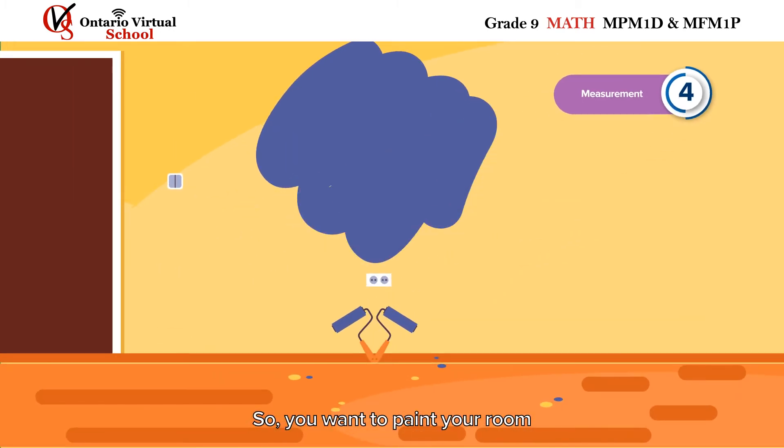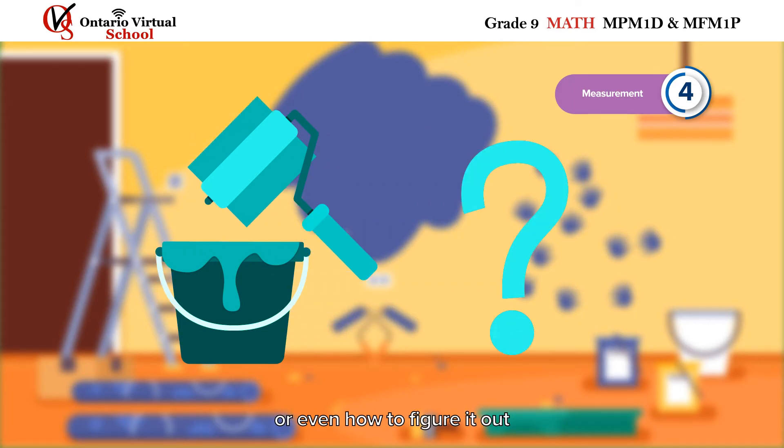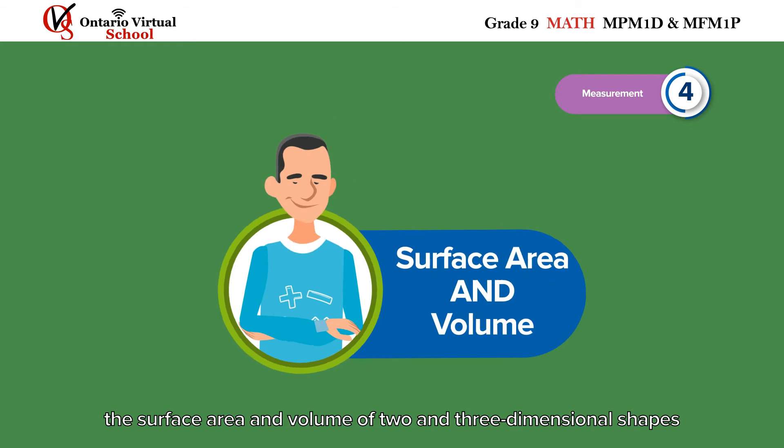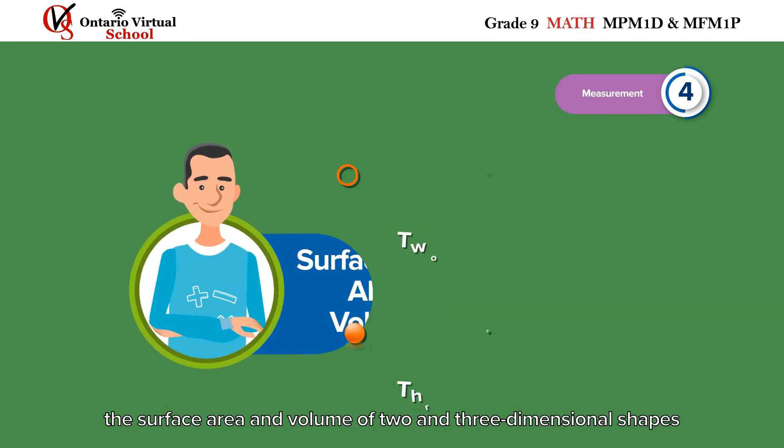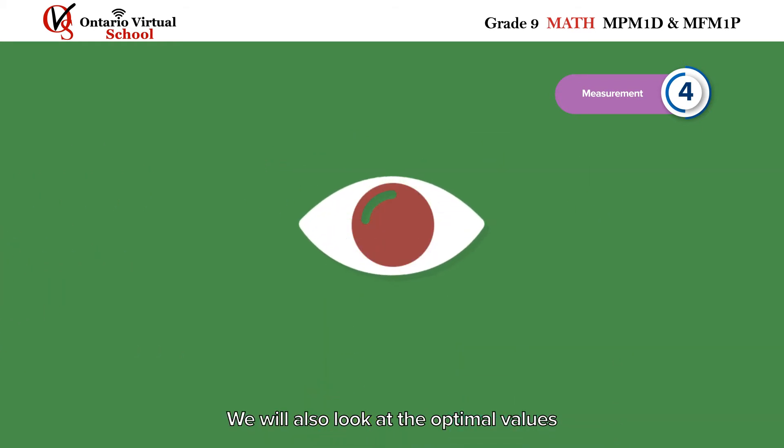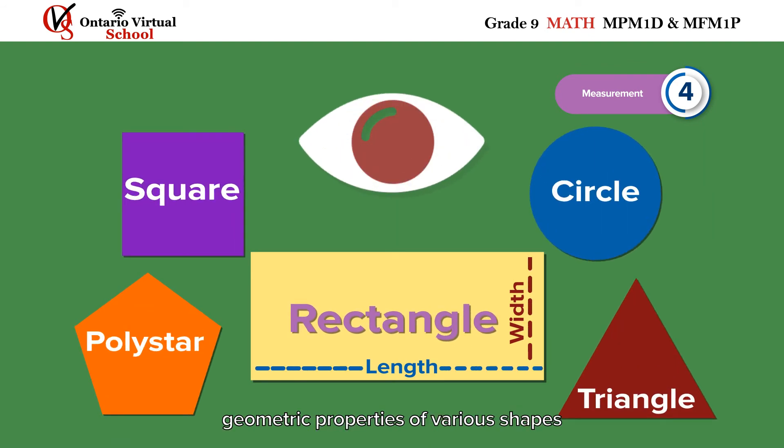Measurement. So, you want to paint your room. Do you know how much paint you're going to need, or even how to figure it out? In this unit, you will learn how to calculate the surface area and volume of 2D and 3D shapes, so you can figure out exactly how much paint to buy. We will also look at the optimal values for rectangles and discuss how to confirm geometric properties of various shapes.